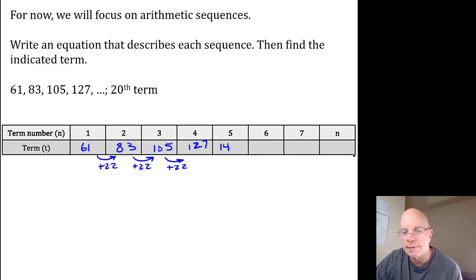127 plus 22 is 149. Add 22 to 149, I get 171, and then 22 more than that would be 193.